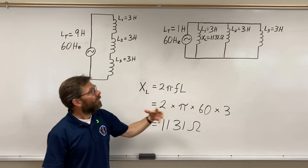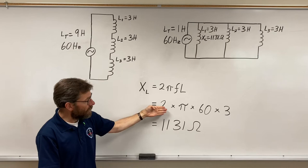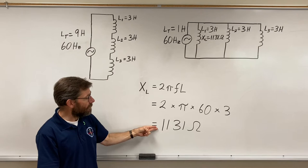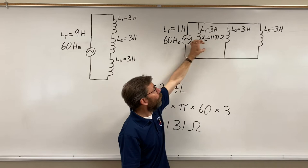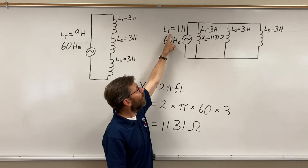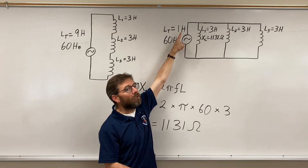Now what we're going to find out is this: I have a choice of calculating this inductive reactance for each inductor and then totaling my ohms, or can I take my total inductance and use that number to get the same amount of ohms?